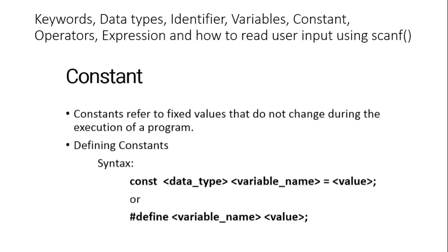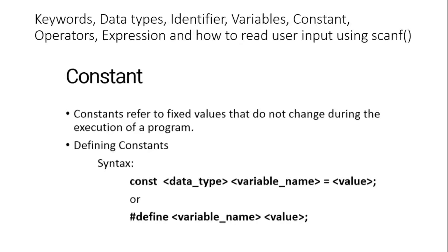A constant is a variable whose value cannot be changed during execution. There are two ways to define constants. The first is using the const keyword with a data type, constant name, and value — for example, 'const int MAX = 100;'. The second way is to define a constant before the main method as a header statement using '#define' followed by the variable name and value.